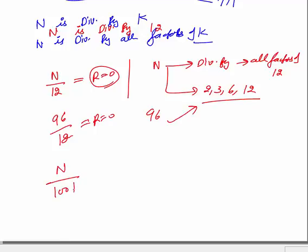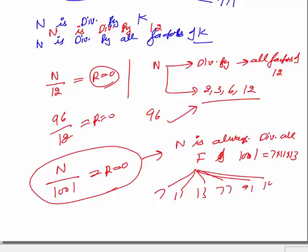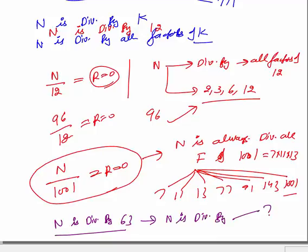Similarly, if n is divisible by 1001, then n is divisible by all factors of 1001: 7, 11, 13, 77, 91, 143, and 1001. Also, if a number is divisible by 63, it is divisible by all factors of 63, which are 7, 9, 63, 3, and so on.